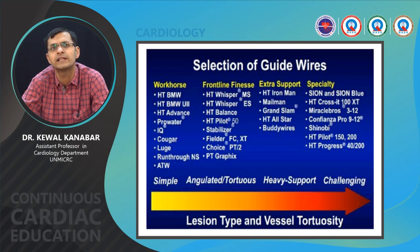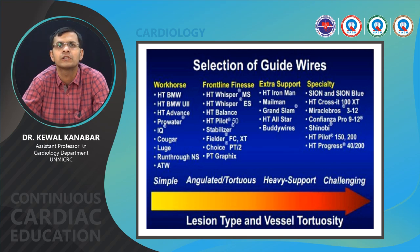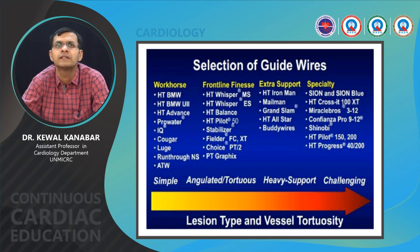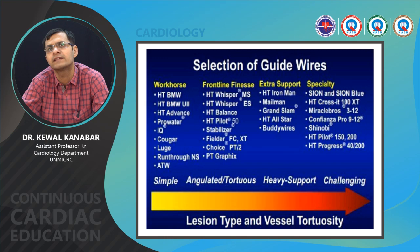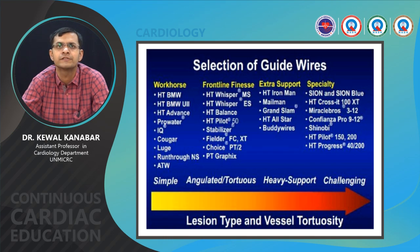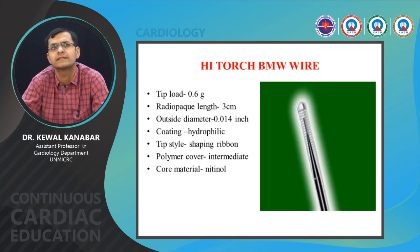Selection of guide wires goes from simple to challenging. For simple lesions we start with workhorse wires — BMW, Run-Through NS, or Sion Blue. Then we have frontline finesse wires like the Whisper or Pilot wire. Then extra support wires like Iron Man or Grand Slam. Specialty wires like Crossit, Miracle, Confianza Pro, Hornet, and Pilot 200 are used mostly for CTOs.